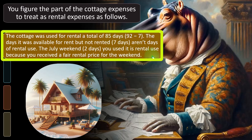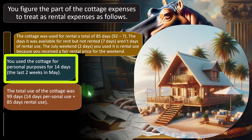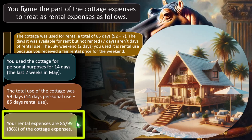The July weekend — two days you used it — counts as rental use because you received a fair rental price for those days. You used the cottage for personal purposes for 14 days, the last two weeks in May. So total use of the cottage was 99 days: 14 personal plus 85 rental. Your rental expenses are therefore 85 divided by 99 — not divided by 365 — which comes out to approximately 86% of the cottage expenses.